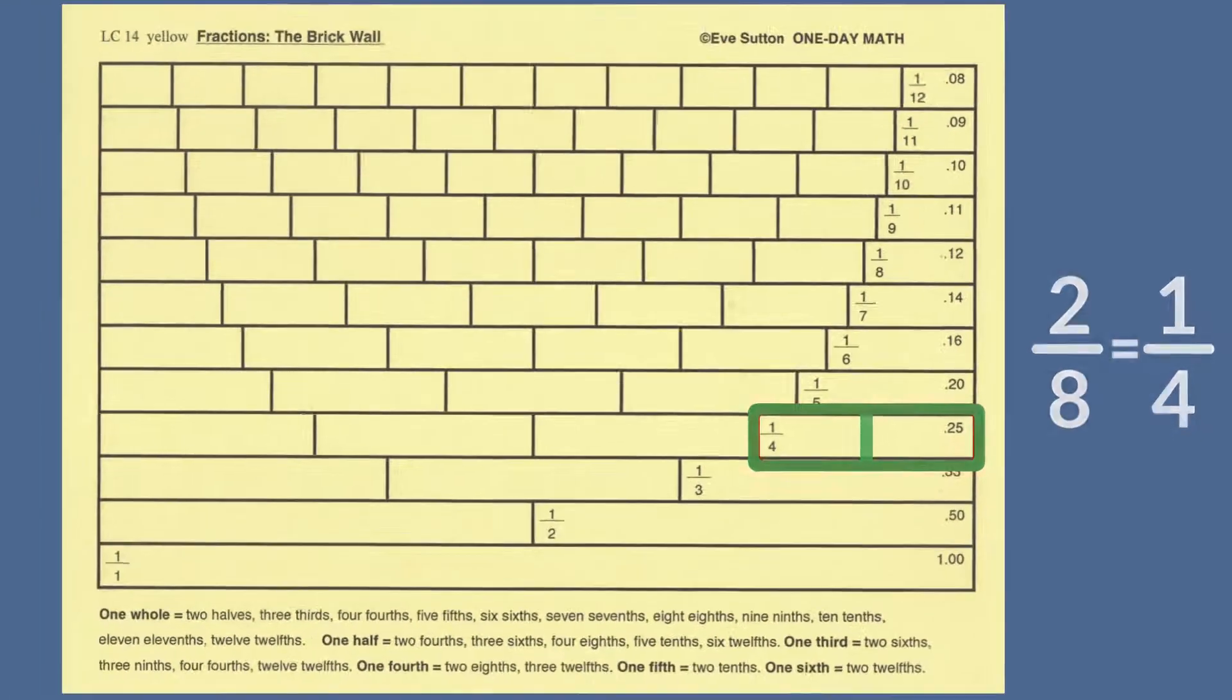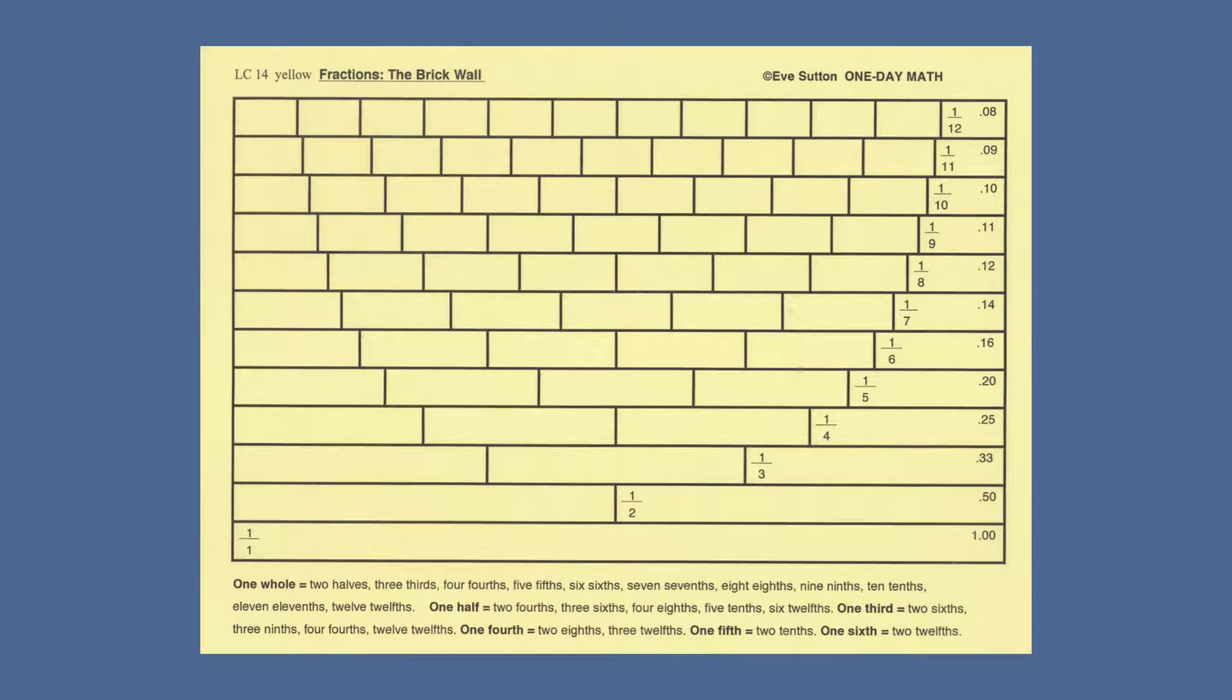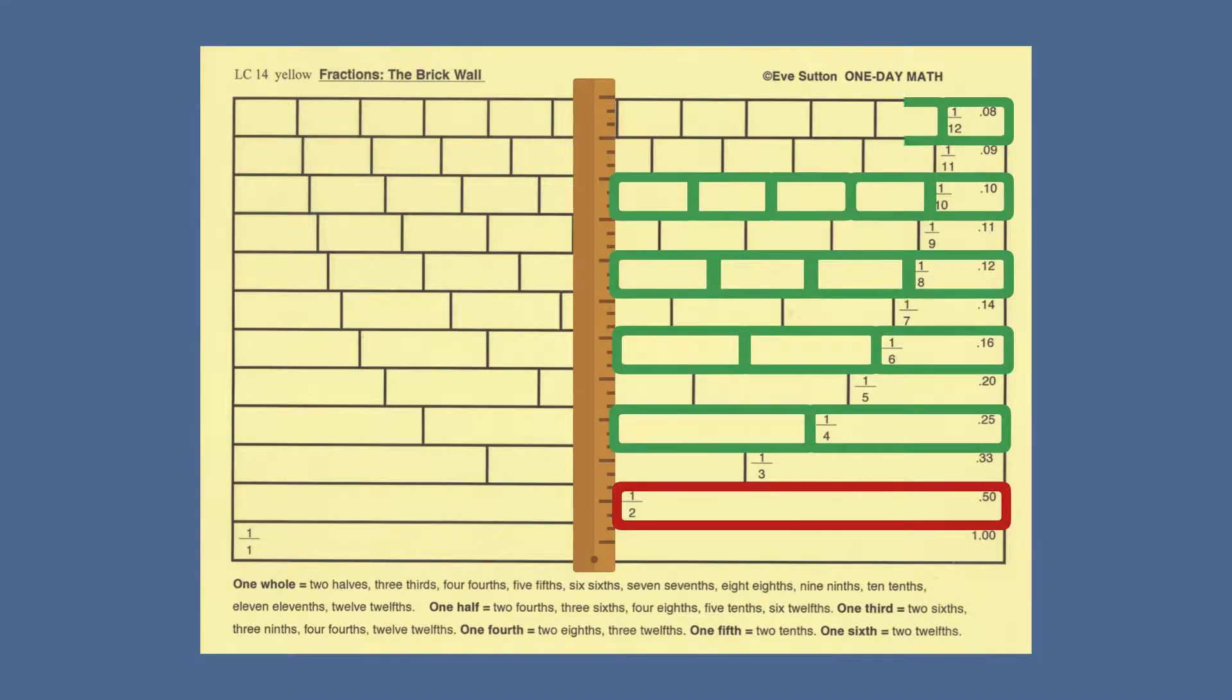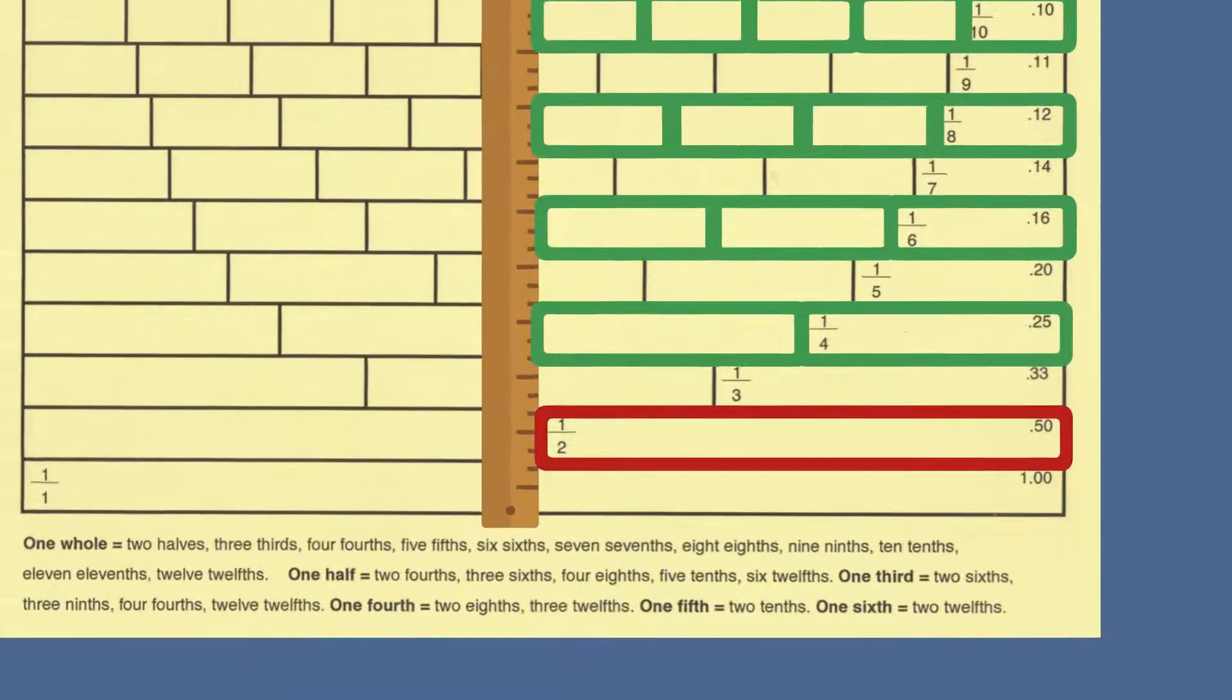Try another example. Put your ruler across the middle of the brick wall, dividing the right half from the left half. How many smaller bricks are exactly equal to one-half? The answer is at the bottom of the card.